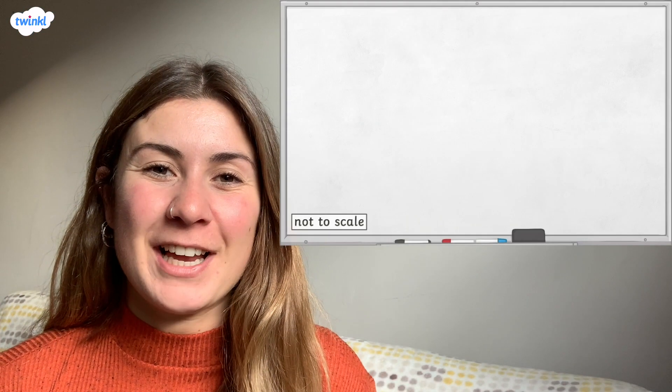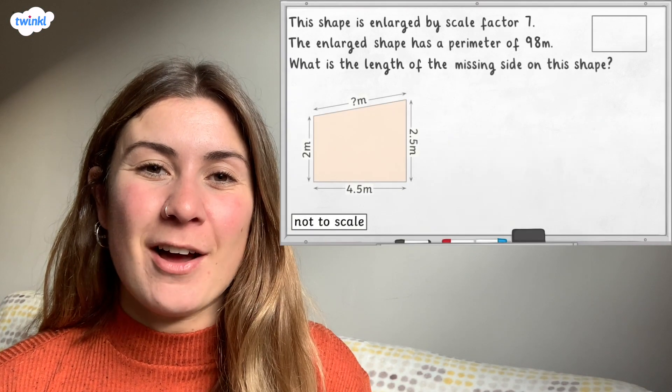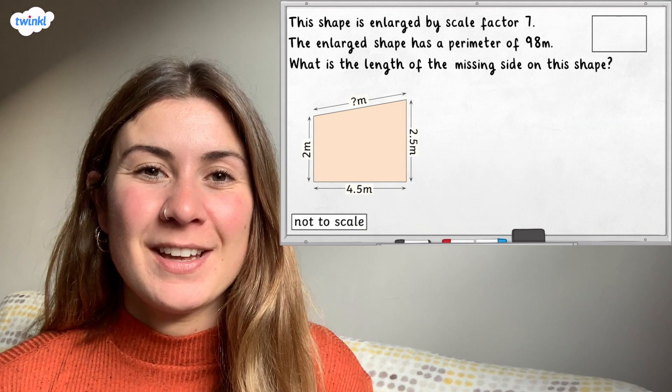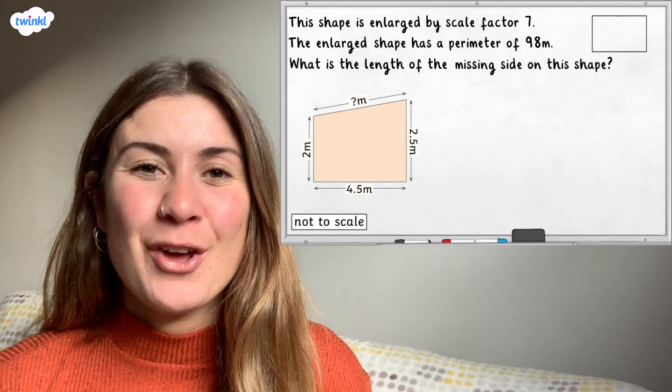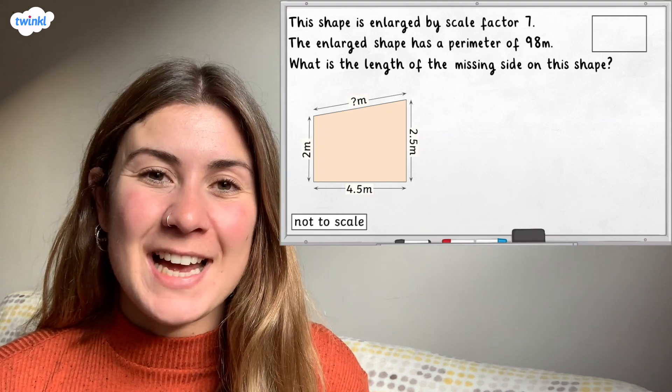Now it's time for a challenge. This shape is enlarged by scale factor 7. The enlarged shape has a perimeter of 98 meters. What is the length of the missing side of the shape?